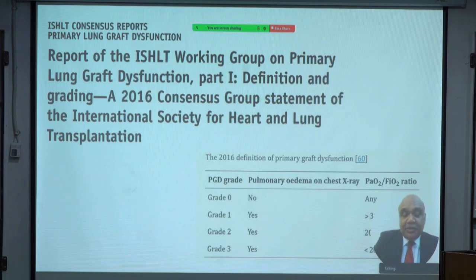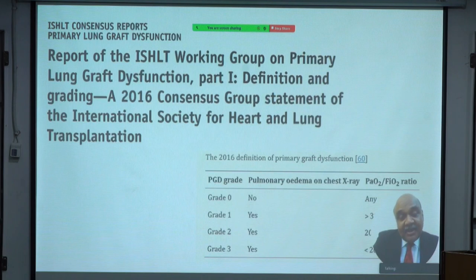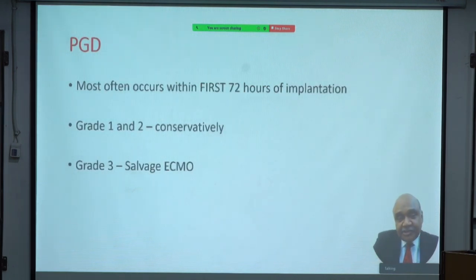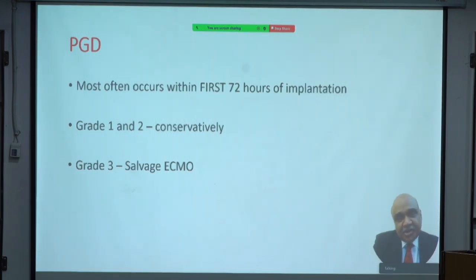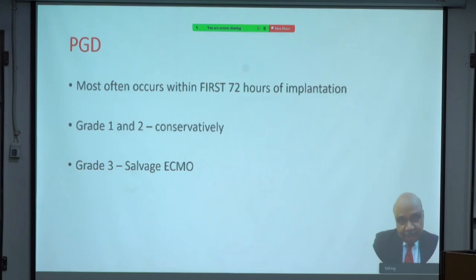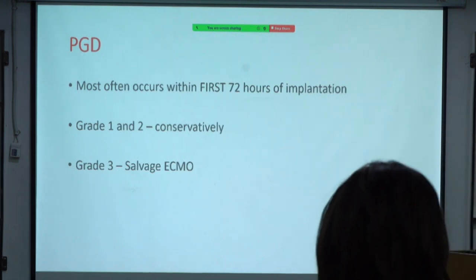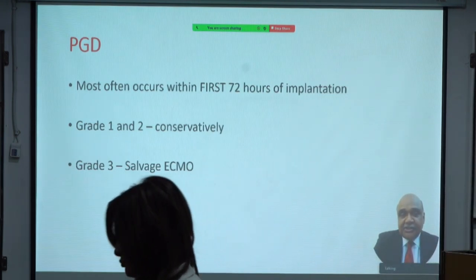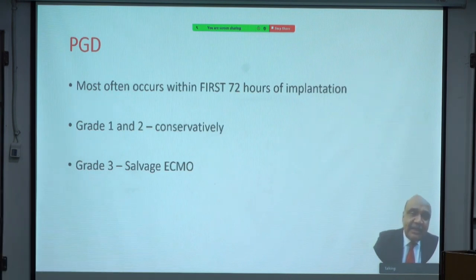Primary graft dysfunction most often occurs within the first 72 hours of implantation. Grade 1 and grade 2 — minor and moderate varieties — often respond to conservative measures such as prolonged ventilation, recruiting more alveoli, diuresis and fluid management, nitric oxide, and possibly sildenafil. Failing all these measures, if PGD progresses to grade 3 with a virtual white-out of the lung and falling PF ratio, one needs to consider instituting ECMO — most often VV ECMO. Rarely, PGD can occur soon after removal of the clamp while still in the theatre.